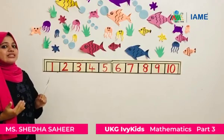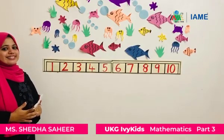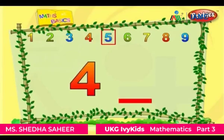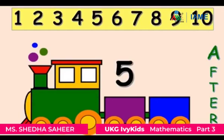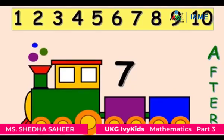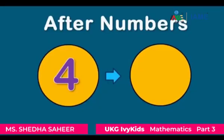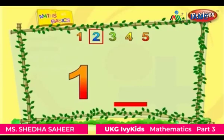Now let's do some more practice on after number. What comes after number four? Five is the number that comes after four. Now what comes after five? Six is the number that comes after five. What comes after seven? Eight is the number that comes after seven. Now tell me what comes after four? Five is the number that comes after four. Now what comes after one? Two is the number that comes after one.